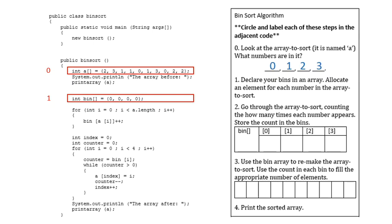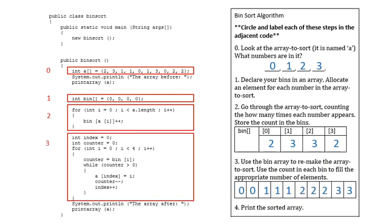Then we go through the array to sort and we're counting up how many times each number appears. As a human, we're just going to eyeball it. We're just going to go like, oh, there's two zeros and there is three ones, and so on. Then what happens is we use that bin array to help remake the array that we were trying to sort. We had two zeros, so we plunk in two zeros. We had three ones, so we plunk in three ones, and so on. And then in this particular code, we printed out the array.